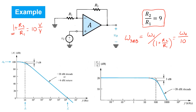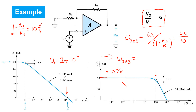The frequency response of this non-inverting configuration is very close to its ideal value of 10 volts per volt all the way up to the 3 dB frequency. Using the same op-amp with a unity gain frequency of 1 megahertz, we get a 3 dB frequency equal to one-tenth of that, or 100 kilohertz, and then rolling off at 20 dB per decade beyond that.